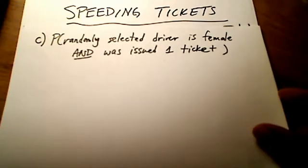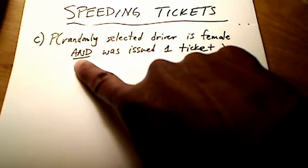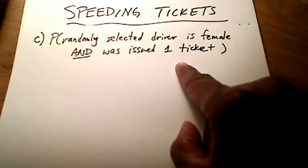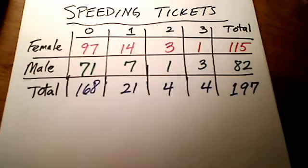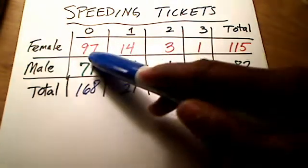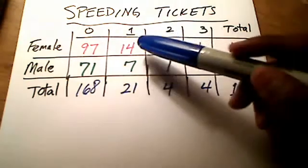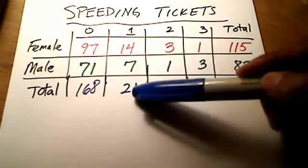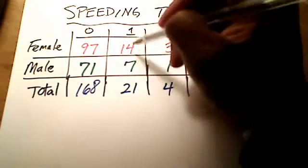Let's change up the problem once again. Now these are going to be a little trickier. How about this: randomly selecting a driver who is female and was issued one ticket? There's only one spot, I hope you see. This whole row represents female - the red row at the top: 97, 14, 3, 1. That's our number of females. And this is our column for one ticket.